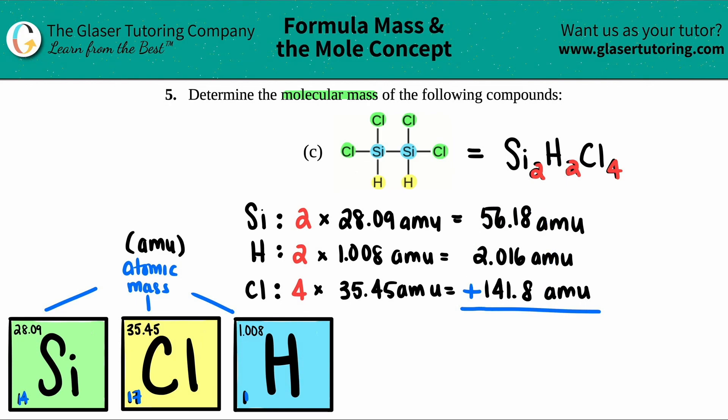So 141.8 plus the 2.016 plus the 56.18, I get 199.996 amu. So roughly about, you know, clearly 200 amu is the molecular mass of Si2H2Cl4, and that is your final answer there.